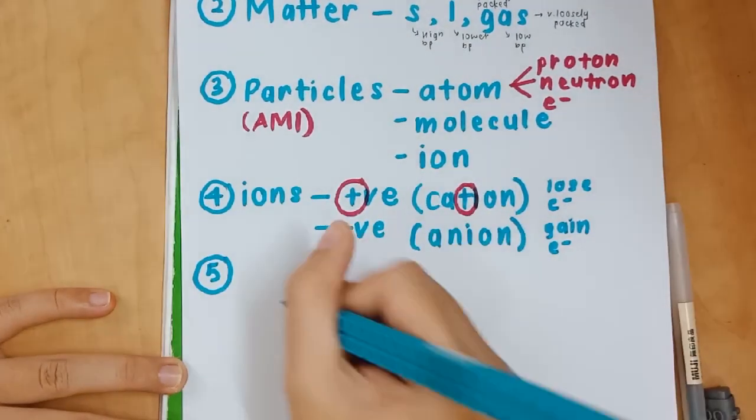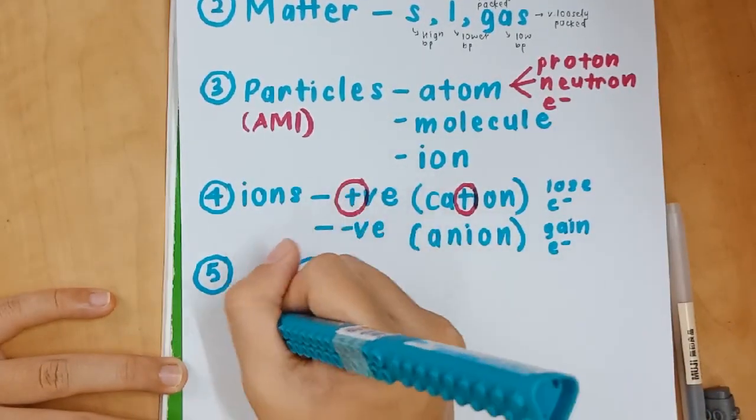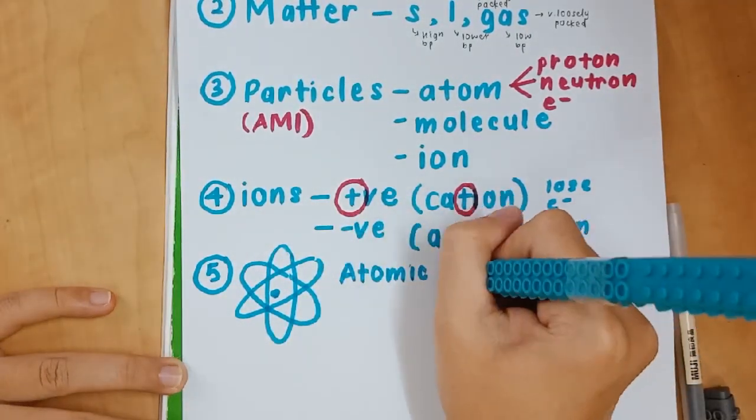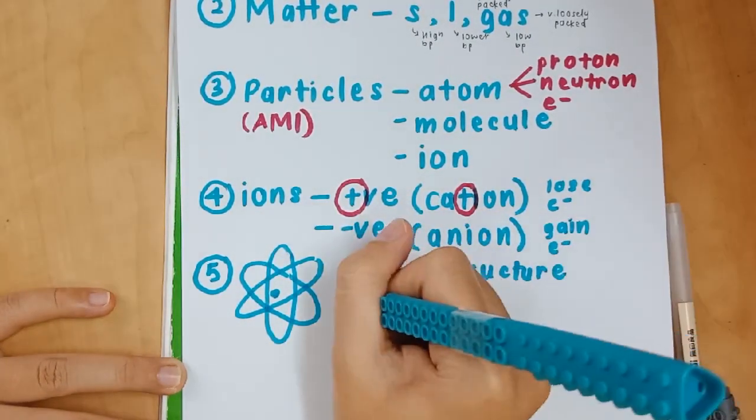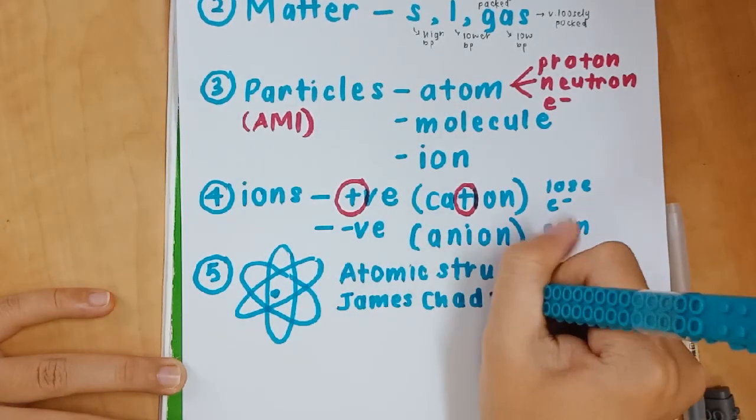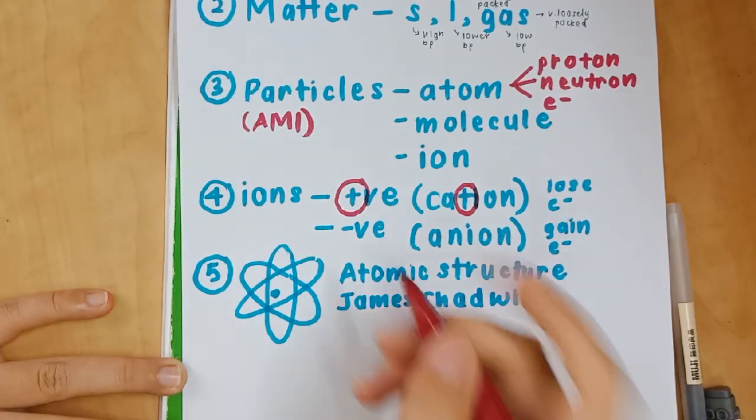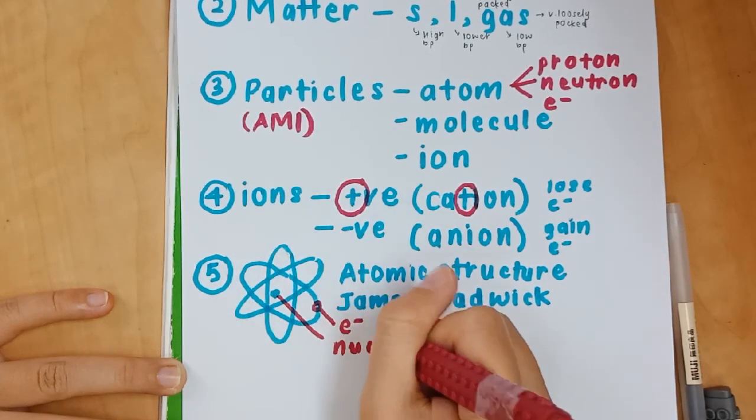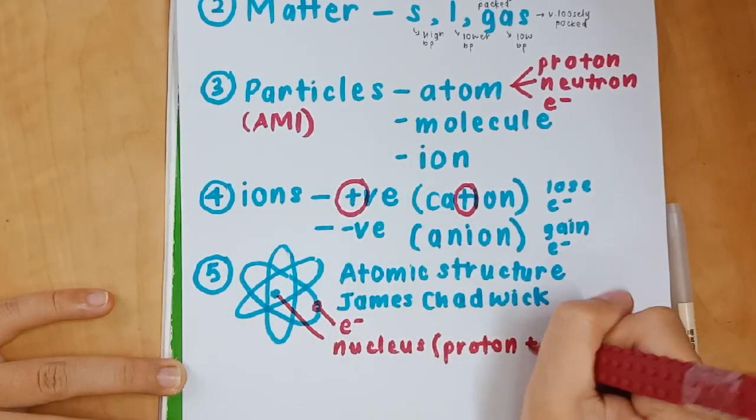Number five is the atomic structure as suggested by James Chadwick. There were a lot of structures before this one, but the one that is accepted is the one he suggested. As you can see, there's an electron on the electron shell and a nucleus in the middle.